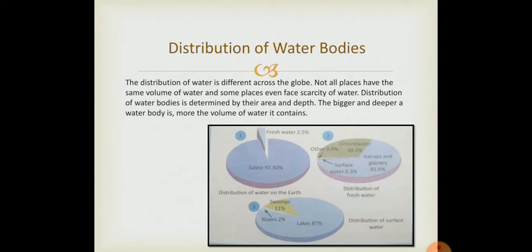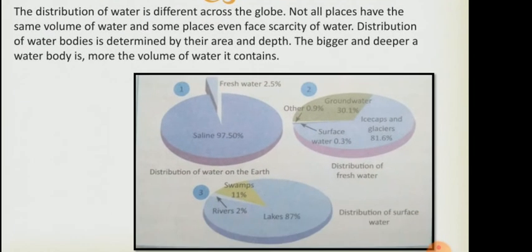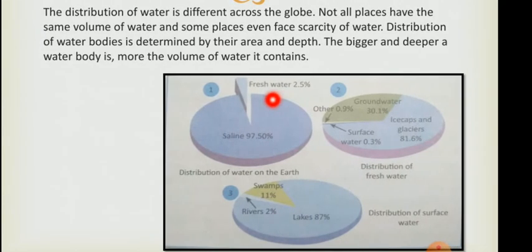Distribution of water bodies is determined by their area and depth. The bigger and deeper a water body is, the more the volume of water it contains. In this picture you can see that only 2.5% is fresh water and 97.5% is saline. This is not drinkable water. How is the distribution of fresh water? 81.6% is in ice caps and glaciers. The ground water is 30.1% and the surface water is 0.3%. We get 87% of water from lakes, 2% from rivers and rest 11% from swamps. In this picture it is clear that only 2.5% of water is fresh and rest is saline, that means salty water.